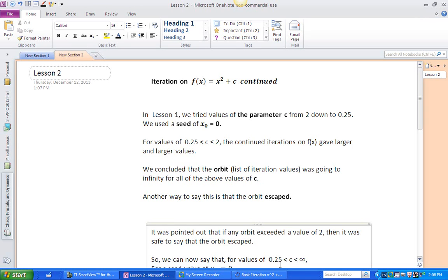All right, so let's talk about what we did on lesson one. We tried values of the parameter C from two down to 0.25. Remember, we're iterating on x squared plus C, and always use the seed x0 value of zero. And we discovered that between 0.25 and two, but not including 0.25, that the continued iterations gave larger and larger values, and we concluded that the orbit, which is the list of the iteration values, was going to infinity for all of the above values of C.